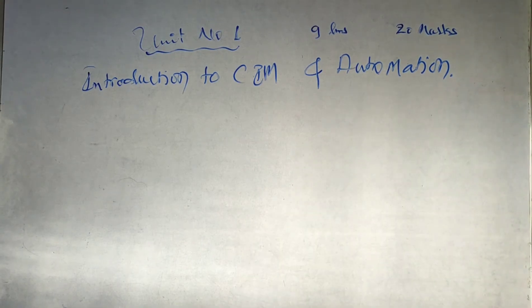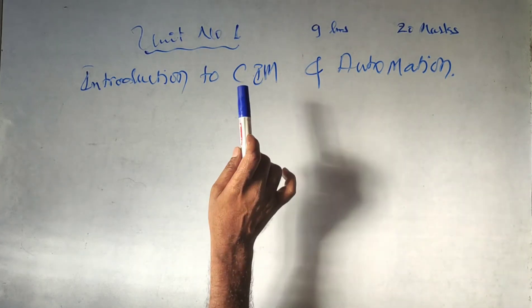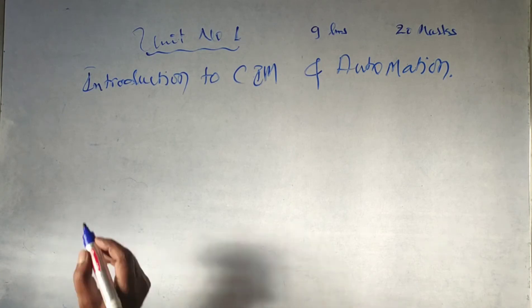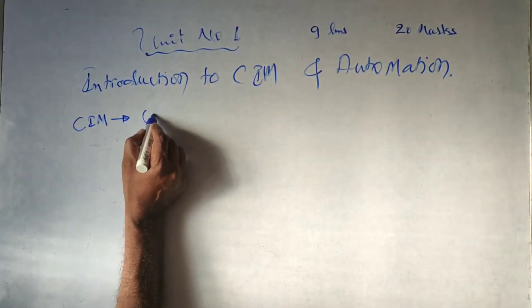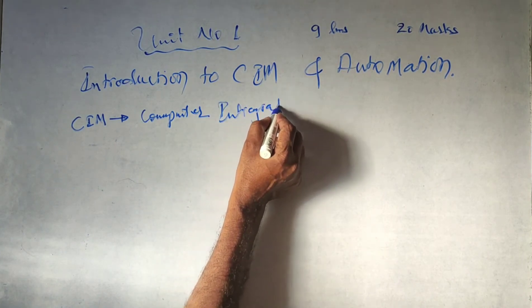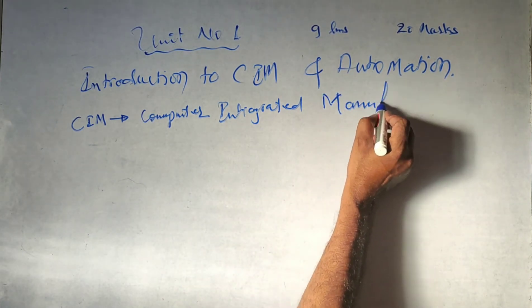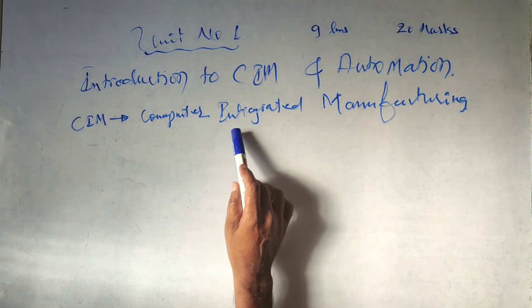Introduction to CIM and Automation. First, we can understand what is CIM and what is automation. If you understand these two terms with respect to this subject, we can understand the rest of the things. This is very simple. CIM is what? Not mobile SIM — that is Computer Integrated Manufacturing.